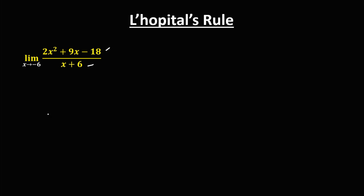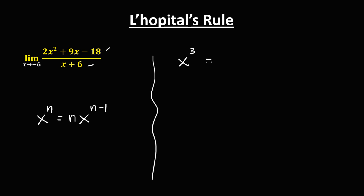To find the derivative using this formula: if we have x to the power n, the derivative is n times x to the power n minus 1. So if we have x to the power 3, the exponent becomes the numerical coefficient, then minus 1 for the exponent, giving x to the power 2 — so the derivative of x³ is 3x². For 4x squared, we multiply 2 times 4, that's 8, then x to the power 1, so that's 8x. The derivative of 4x² is 8x.